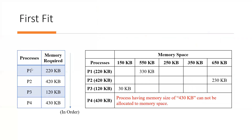We have some processes: P1, P2, P3, and P4. The memory required is: P1 requires 20KB, P2 requires 420KB, P3 requires 120KB, and P4 requires 430KB. The memory spaces available in memory are: 150KB, 450KB, 250KB, 350KB, and 650KB — these partitions are available in memory in this order.